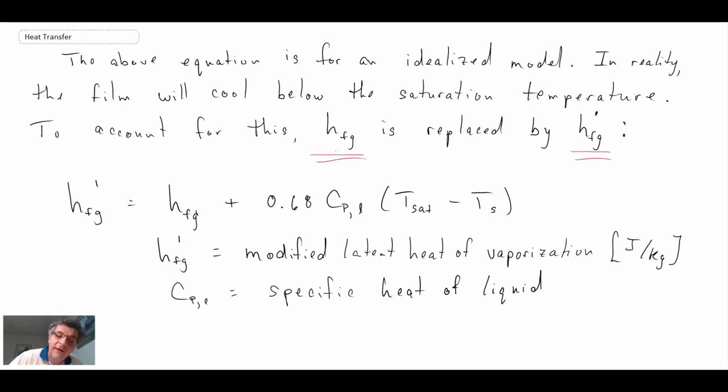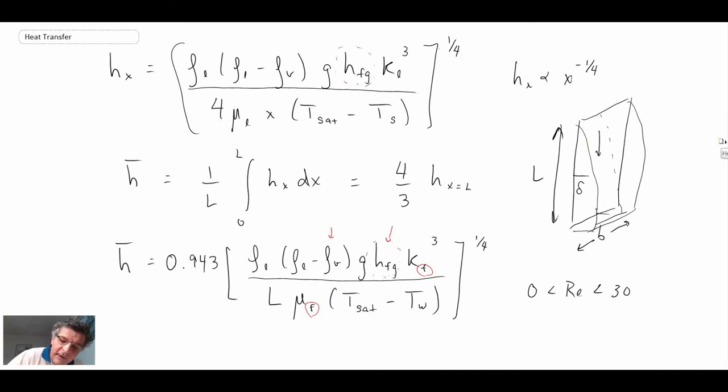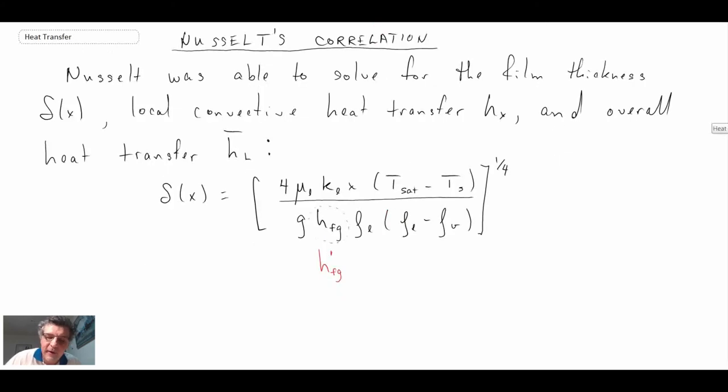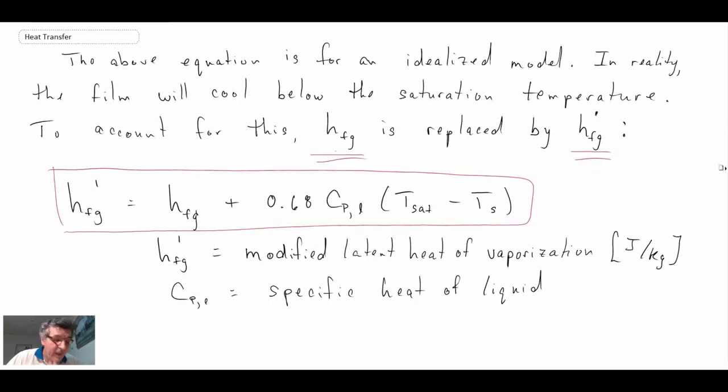So we have this corrected heat of vaporization, and you use this in all of the equations that we have just looked at. So which ones am I talking about? Here you would do HFG prime. Here you would do HFG prime. So Nusselt had done his analysis kind of simplified, and this is a bit of a correction. And then again, I've already mentioned that you put HFG prime in that relationship. So that is the modified heat of vaporization.